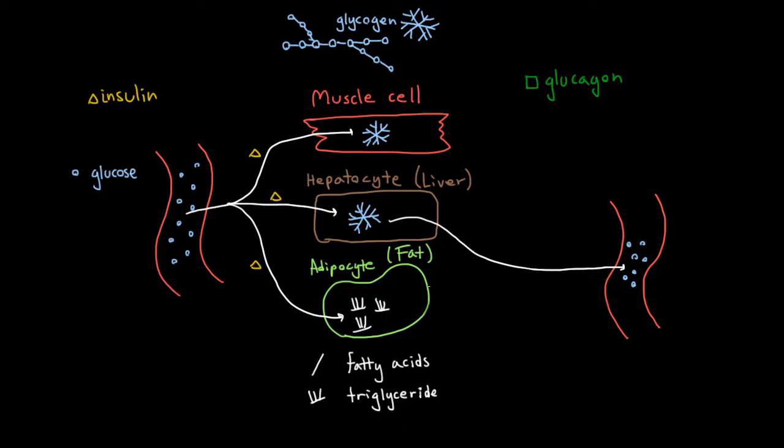The adipocytes, so they're going to take these triglycerides and they're actually going to break them up into fatty acids and put them into circulation. And they can be used like that by some cells of the body for energy. And finally, the muscle cells do something a little different. The reason why we didn't start with them is because they actually don't put the glucose back into circulation. Muscle cells are selfish.